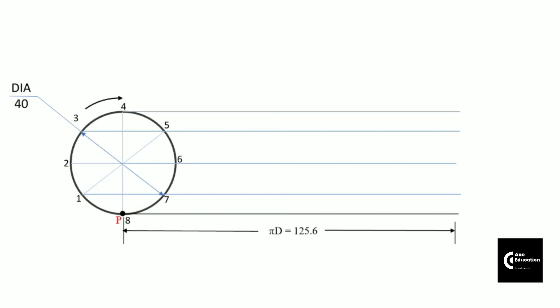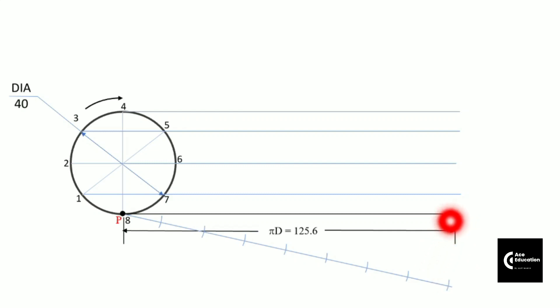The straight line path measures a distance of 125.6 mm, and it's very difficult to divide directly into 8 equal parts. Instead, draw an 8 cm or 16 cm auxiliary line at any suitable angle from point P, divide that line into 8 equal parts, then draw a straight line between the end points of this slanted line and the straight line path. Project these divisions vertically upward onto the center line to divide it into 8 equal parts.